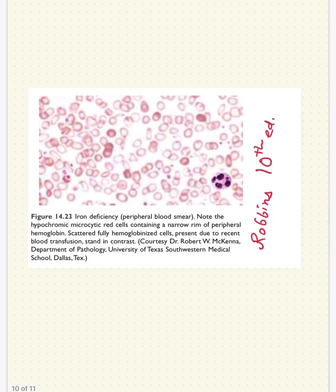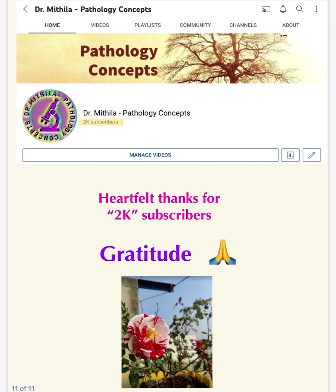For reference, this is the diagram of iron deficiency anemia from Robbins. You can see the microcytes with central pallor more than one third, ring or pessary cells, elliptocytes, pencil cells, and cells with a teardrop appearance. There is also a neutrophil in the peripheral smear. In this case, blood has been transfused, so some fully hemoglobinized RBCs are also visible. I hope this is helpful — feedback is welcome in the comment section, and thank you for the 2000 subscribers!